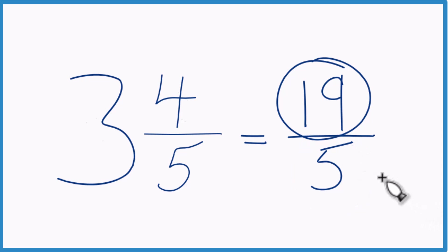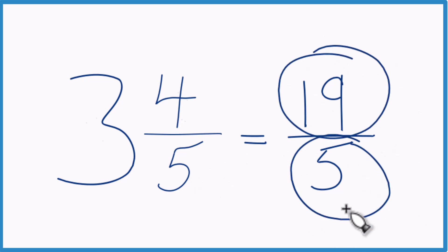Let's do it again. 3 times 5, that's 15. 15 plus 4, that's our 19, brought the 5 across, 19 fifths.